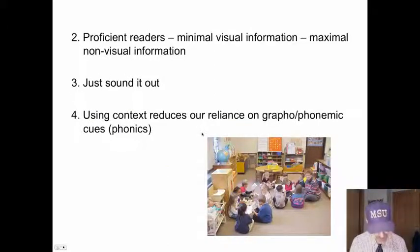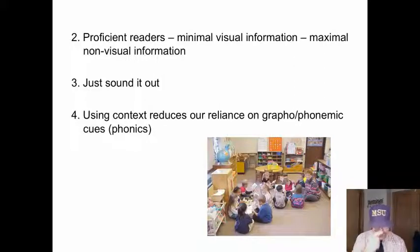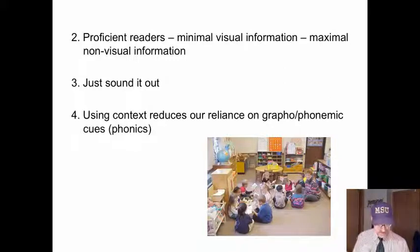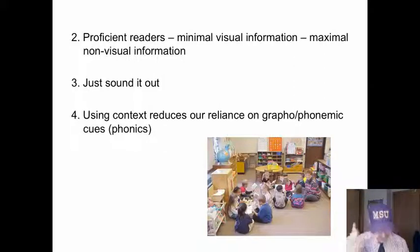Proficient readers use a minimal amount of visual information and a maximum amount of non-visual information. Know that the brain does not passively interpret data gathered by the eyes. Rather, the brain — what's in here — tells the eye what to look at, what to pay attention to, what data to gather, which part of the words to attend to.